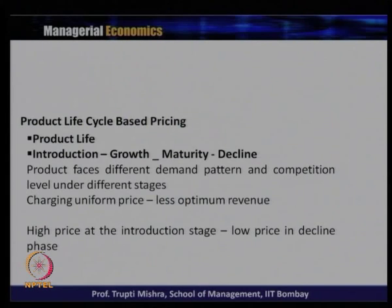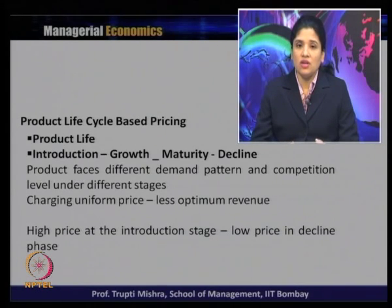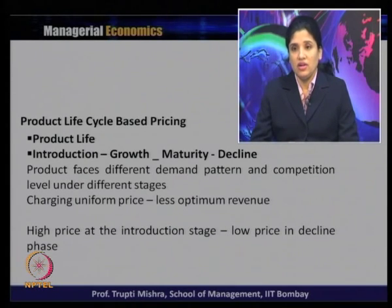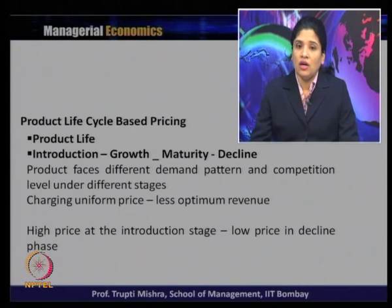Here the pricing is based on the product life. Typically the product life is divided into four stages: the first stage is introduction, second stage is growth, third stage is maturity, and fourth stage is decline. Generally the product faces different demand patterns and competition levels under different stages. Charging a uniform price at different stages generally gives less optimum revenue to the firm. It is advisable that there should be a high price at the introduction stage and a low price in the decline phase.